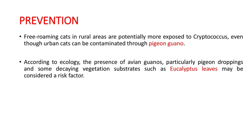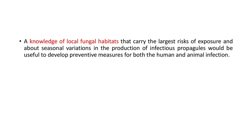For prevention, free-roaming cats in rural areas are potentially more exposed to Cryptococcus, though urban cats can be contaminated through pigeon guano. The presence of avian guano — particularly pigeon droppings — and some decaying vegetation substrates such as eucalyptus leaves may be considered risk factors. Knowledge of local fungal habitats that carry the largest risk of exposure and seasonal variations in the production of infectious propagules could be useful to develop preventive measures for both human and animal infection.